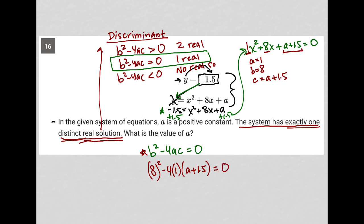Let's simplify that further. 8 squared is 64, minus 4. This just becomes a minus 4 times a becomes minus 4a. And then take that same negative 4, multiply it by a positive 1.5, and you get a minus 6 equals zero. I now have like terms between the 64 and the minus 6. 64 minus 6 is 58.